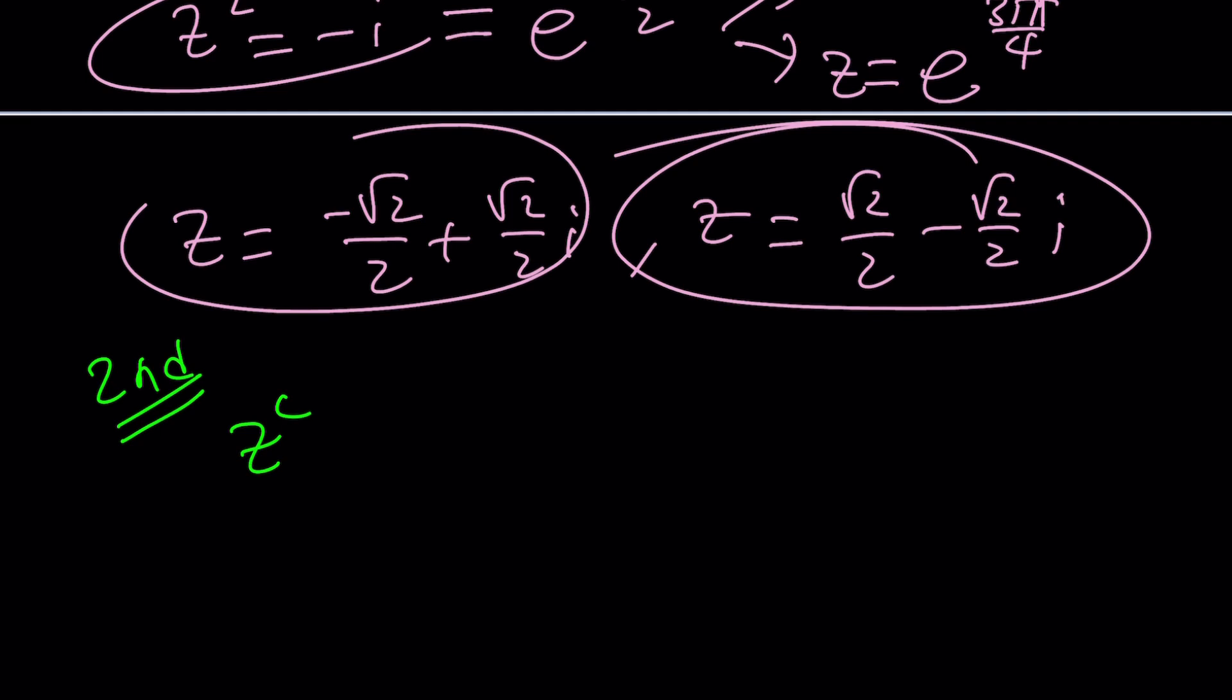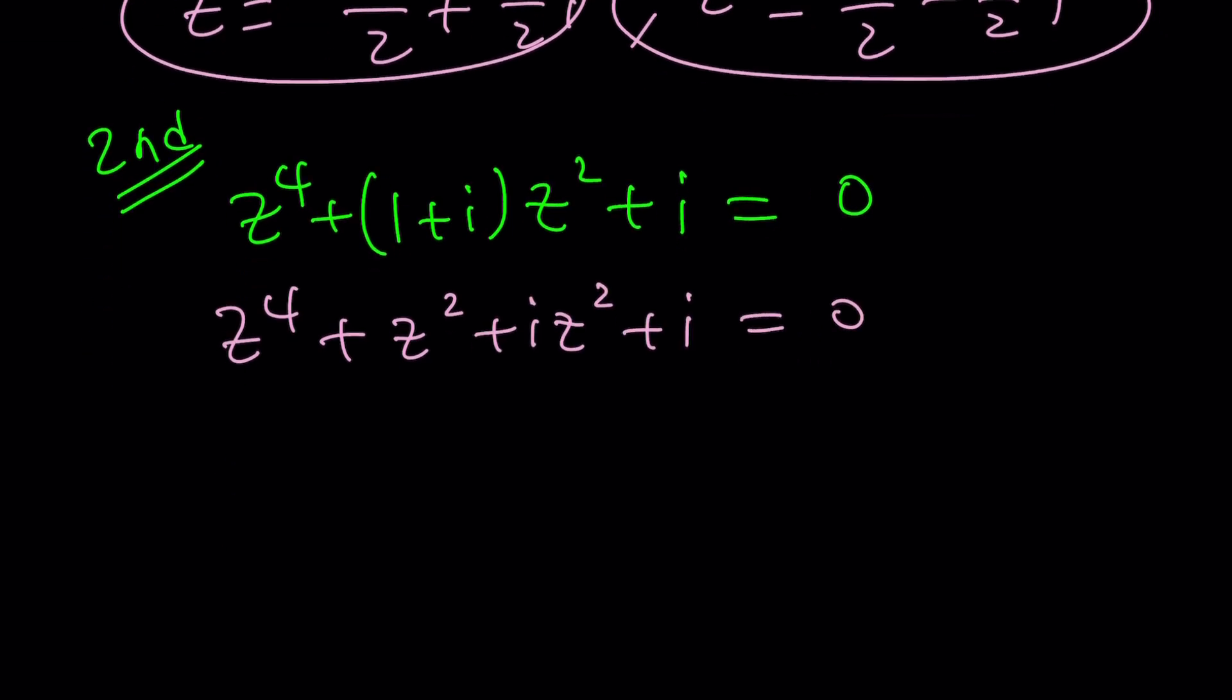So here's the second method. And most of the time, the second method is easier, shorter, seems shorter, or seems easier than the first one. But again, you're going to decide. So I'm going to go ahead and distribute this. And that's going to give me z to the fourth plus z squared plus i z squared plus i equals 0.